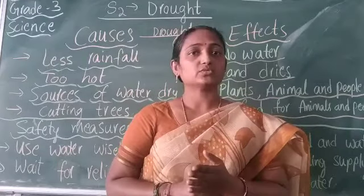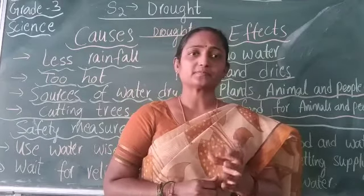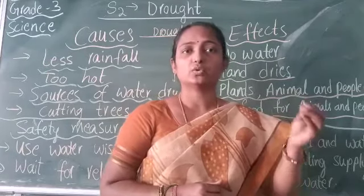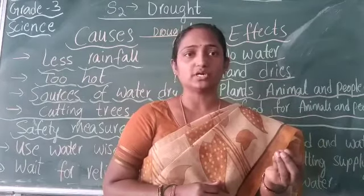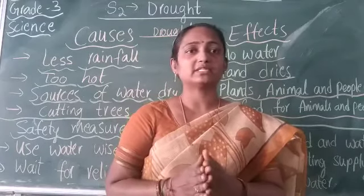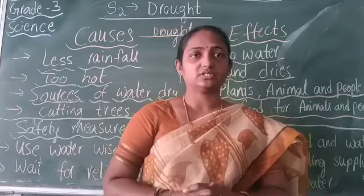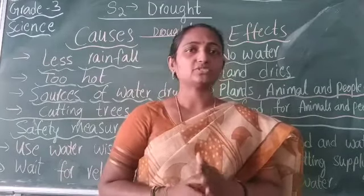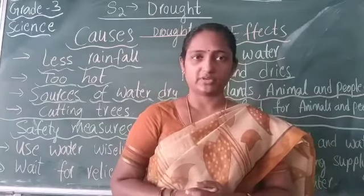Drought happens when there is too little rainfall in the areas and when temperatures are very high. The high temperatures lead to less rainfall and drying up of everything — splits happen on the earth surface — leading to drought conditions. Let us learn the causes, effects and safety measures to prevent it.